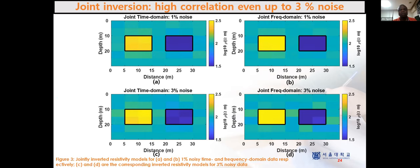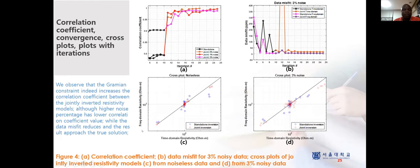Even in the presence of noise — for one percent and three percent random noise — figure three shows the result after joint inversion. Even in the presence of noise, we still see very high correlation between the results. Now I show the correlation plots, data misfits for the noiseless and the three percent random noise cases with iteration.